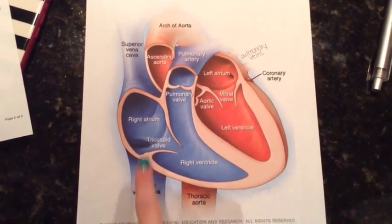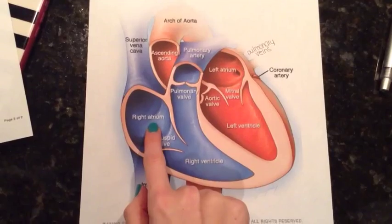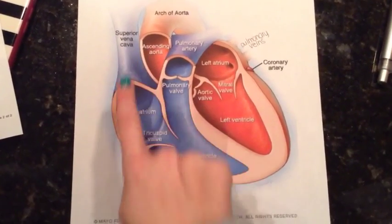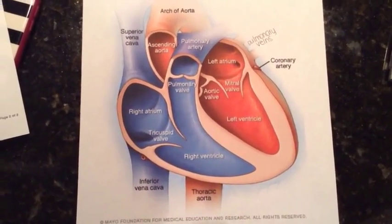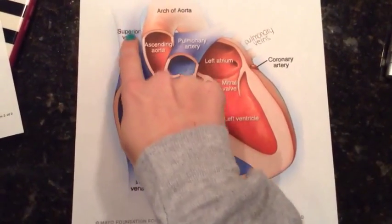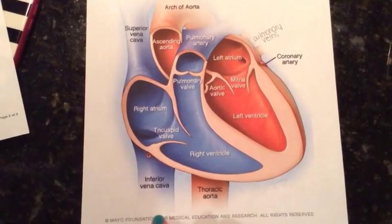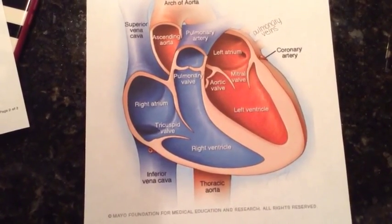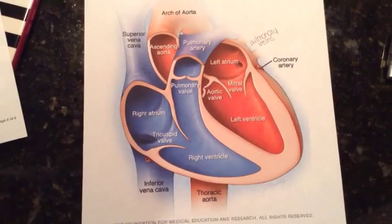The right atrium receives blood returning to the heart from the superior and inferior vena cava. The superior vena cava returns deoxygenated blood from the head, neck, arm, and chest regions of the body to the right atrium. The inferior vena cava returns deoxygenated blood from the lower body regions — for example, legs, back, abdomen, and pelvis — to the right atrium.